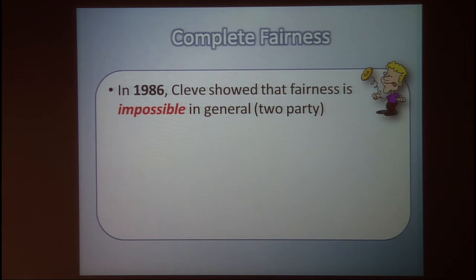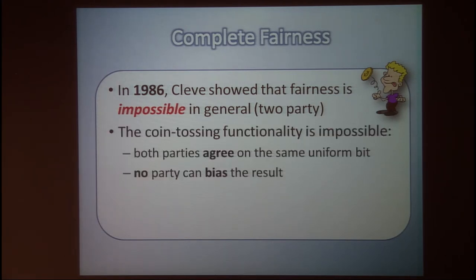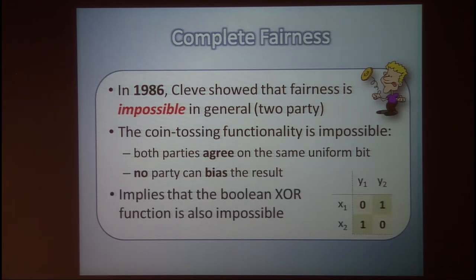Indeed, in 1986 Cleve showed that fairness is impossible to achieve in general. Specifically, he showed that the coin-tossing functionality — where the parties just want to toss a fair coin such that the coin will be uniform and no party can bias the result — cannot be computed with complete fairness. This impossibility result implies that the Boolean XOR function also cannot be computed fairly, because if we have an implementation for XOR we get coin tossing for free.